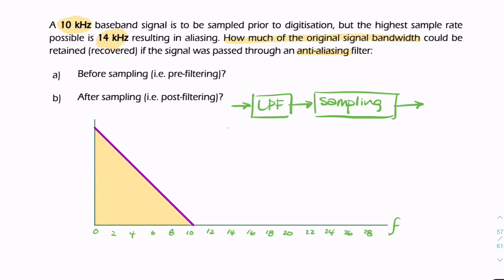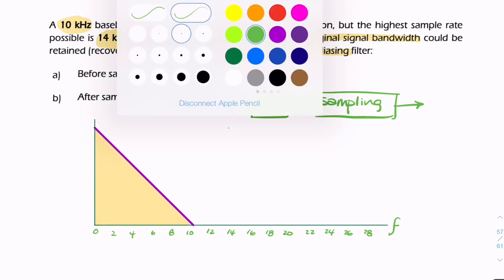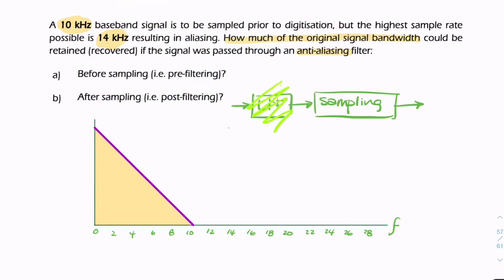If there was no low pass filter—if we were only sampling at 14 kHz—we would have a replica of width 10 kHz centered at 14 kHz. It would extend from 4 kHz (14 minus 10) to 24 kHz (14 plus 10), and we'd have this area